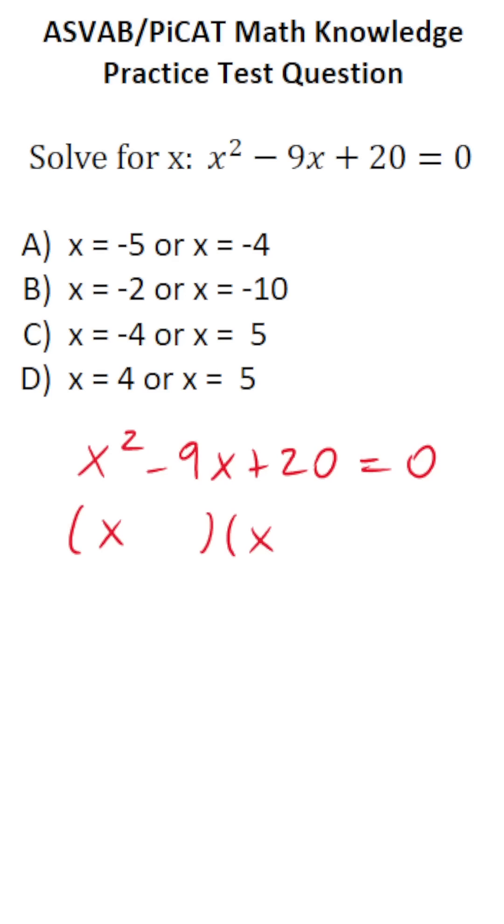And it should look like this: x times x in parentheses. And now we're looking for two numbers that multiply to positive 20 but add to negative 9. That's pretty easy to figure out. What about negative 5 and negative 4?